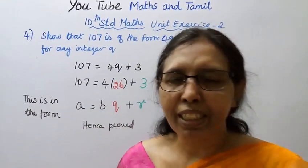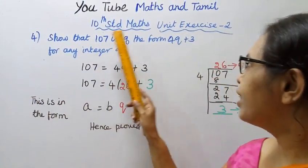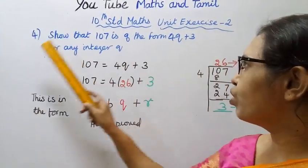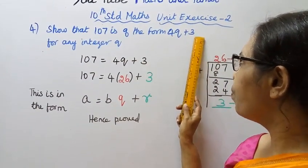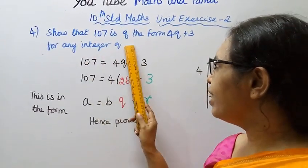Hello students, welcome to Maths and Tamil channel. 10th standard Maths unit exercise 2, 4th sum. Show that 107 is of the form 4Q plus 3 for any integer Q.